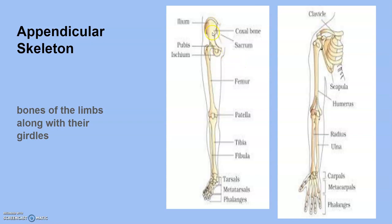The pelvic girdle consists of two coxal bones, one on each side. Each coxal bone is formed by the fusion of three bones: ilium, ischium, and pubis. At the point of fusion of these three bones is a cavity called the acetabulum, where the thigh bone or femur joins. The two halves of the pelvic girdle meet to form the pubic symphysis, which contains fibrous cartilage.